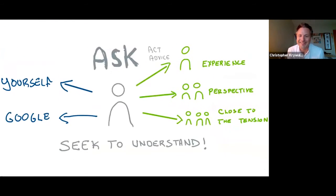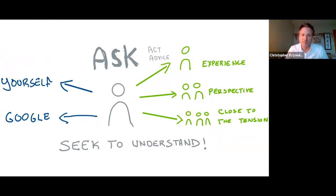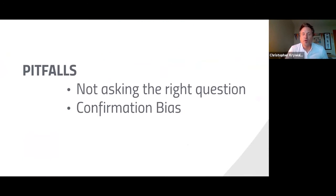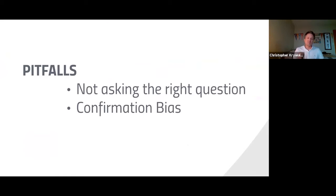I love that story. The blind men shaped their decisions only from their own perspective and did not seek to understand. So Step Two is to Ask — ask yourself, Google it, seek advice, find someone with experience or perspective, or someone close to the tension. The pitfalls here: first, not asking the right question. Second is confirmation bias — you have a hypothesis and you only ask questions that confirm the answer you already expect.